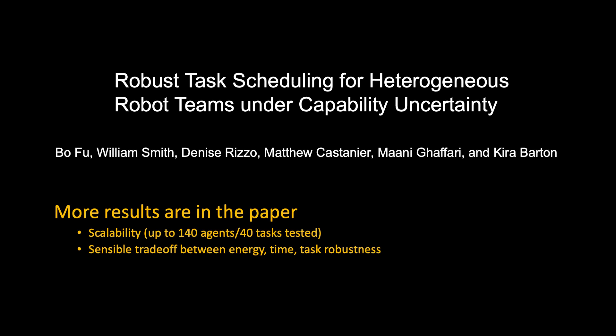Up to 140 agents and 40 tasks are tested. In the experiment, the proposed framework makes a sensible trade-off between time, energy, and task requirements matching with the selected hyperparameters.